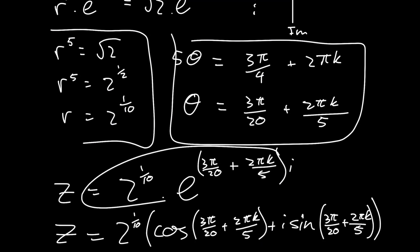So this is it solved in the trigonometric modulus argument form, and this is it in the exponential form. And if we were asked in polar form, then we could simply substitute in values for k, being zero, one, two, three, and four, which then would give us these specific arguments.